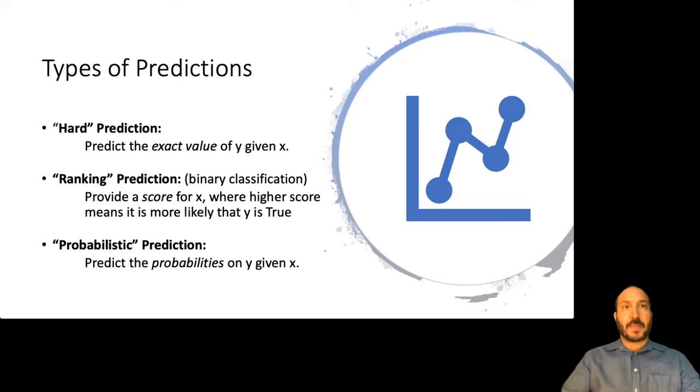Now sitting in between these two specifically for binary classification is what I'll call a ranking prediction, which is where you're providing a score for X and a higher score means it's more likely that Y is true. But the scores may not necessarily be meaningful as probabilities. In fact, the scores may not even be numbers between 0 and 1. So all you really know about the score is that when it's bigger, Y is more likely to be true, but you're not sure really how to interpret that as a probability. Or it may purport to be a probability, but we'll find that it doesn't actually behave like a probability.